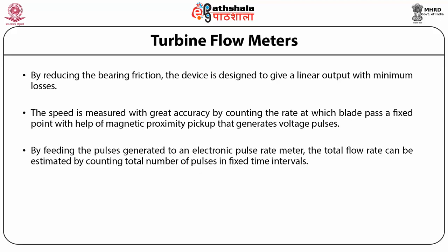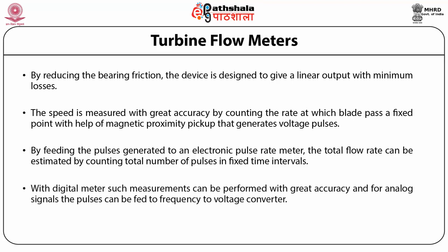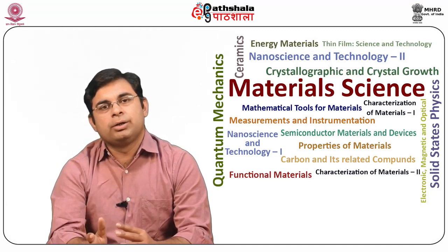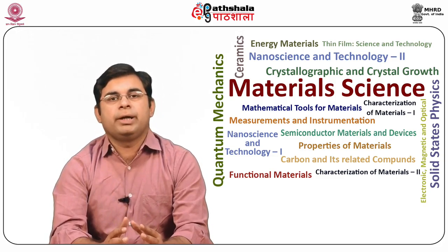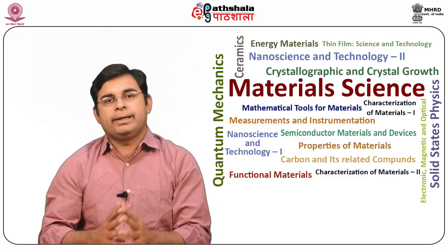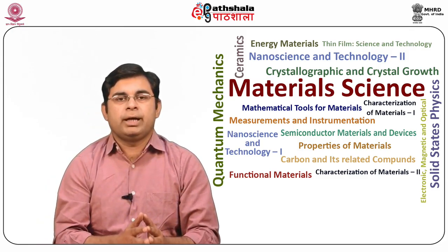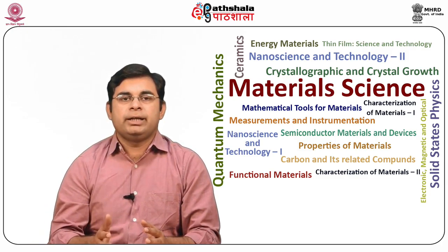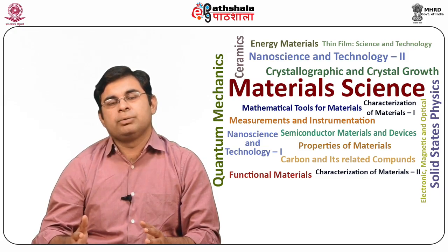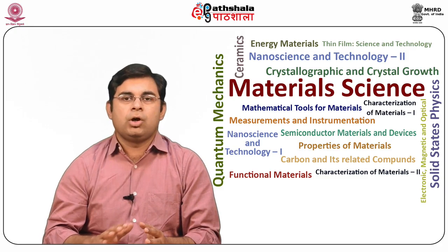By feeding the pulses generated to an electronic pulse rate meter, the total flow rate can be estimated by counting the total number of pulses in fixed time intervals. With a digital meter, such measurements can be performed with great accuracy; for analog signals, the pulses can be fed to a frequency-to-voltage converter. Turbine flow meters are the most commonly used types of flow meter. They provide a direct means to measure both liquid and gas flow rates, are used in remote monitoring and aircraft applications, and have very good linearity of ±0.25% of full scale.